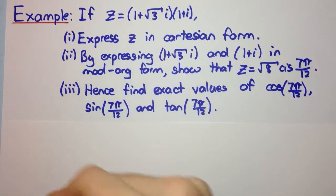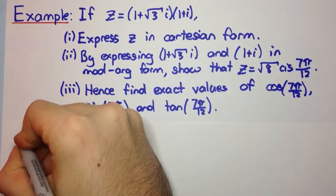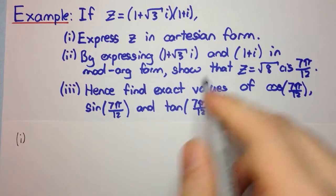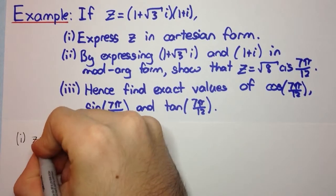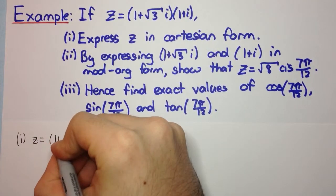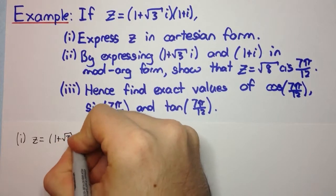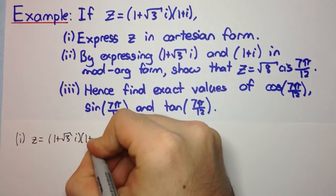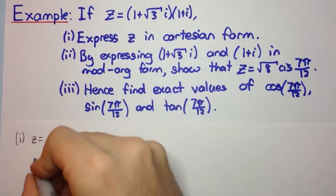Let's look at part one first. Express it in Cartesian form. Remember, Cartesian form is x plus iy. All we've got to do is just expand this out, which is fairly simple.